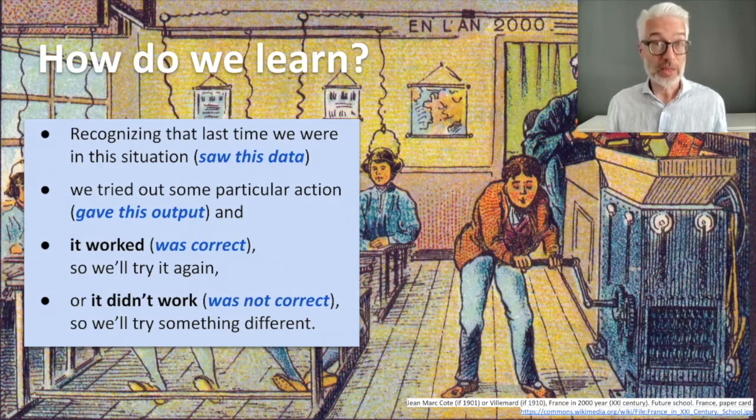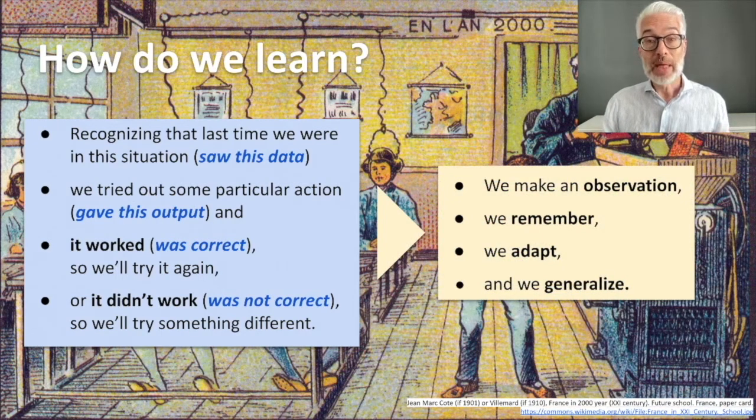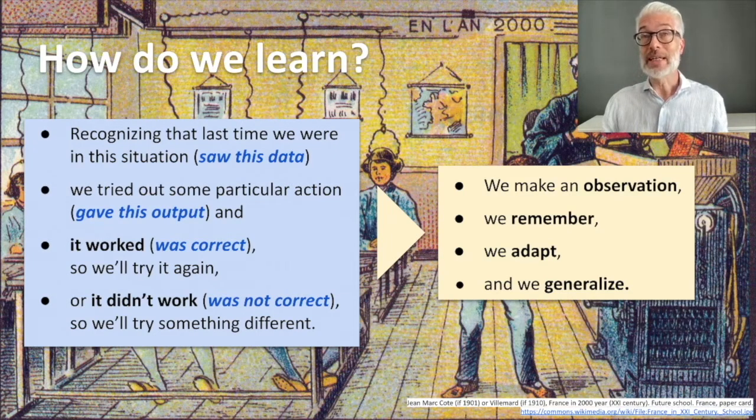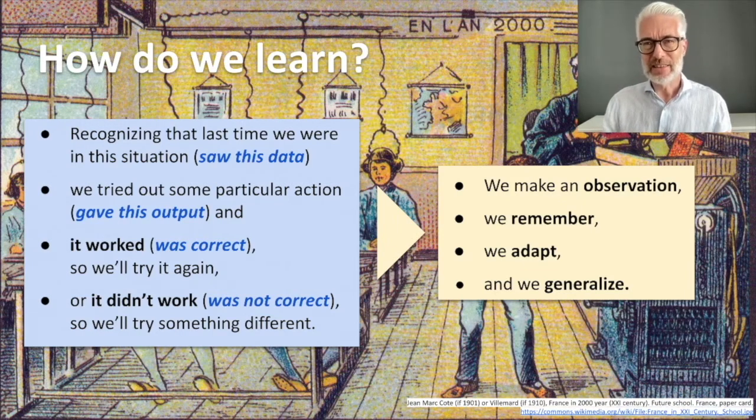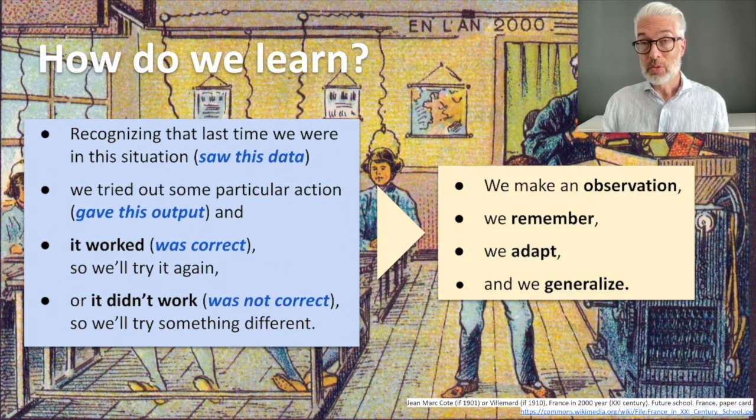You can directly deduce the basic principle: we are making an observation, trying to remember what we did in a similar situation, and most likely we have to adapt our strategy because the situation might be slightly different. We generalize, make assumptions, and then try to transfer them to new situations. This exactly is what we do as humans when we learn.